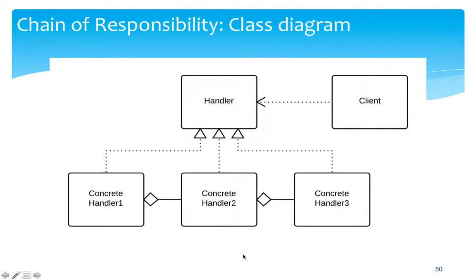The UML diagram for the structure is something like this. The client issues a request to the handler. The concrete handler implements the handler and has successor information. Handler one has a successor which is handler two, and handler two's successor is handler three. A request made to concrete handler one — if it can handle it, it does; otherwise it is forwarded to the next handler and so on. That's how this design pattern works.